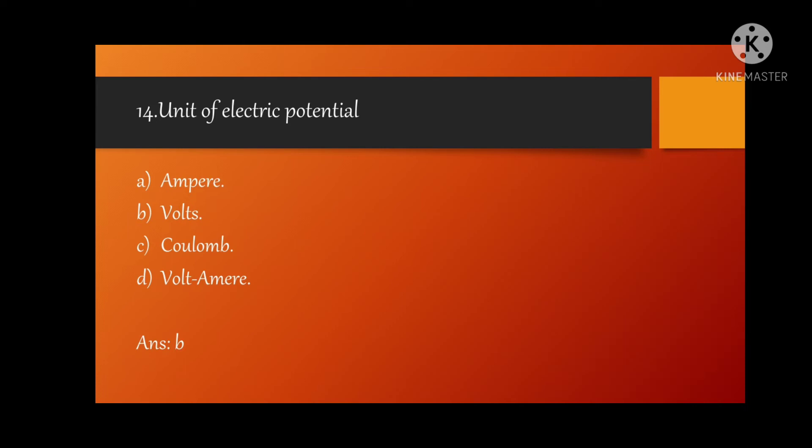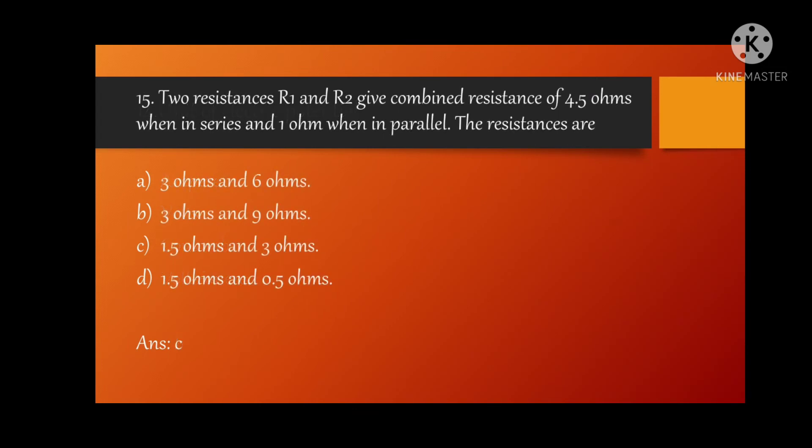MCQ 14: unit of electrical potential? Option B is correct, volt. MCQ 15: two resistances R1 and R2 give combined resistance of 4.5 ohms when in series and 1 ohm when in parallel. The resistances are? Option C is correct, 1.5 ohm and 3 ohm.